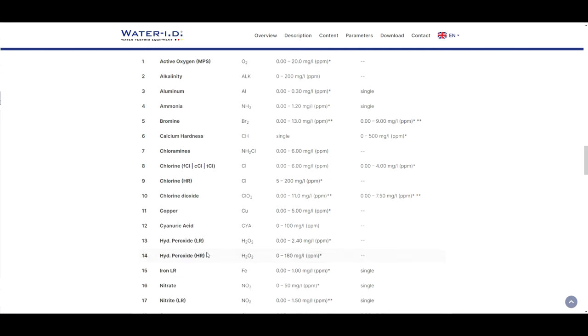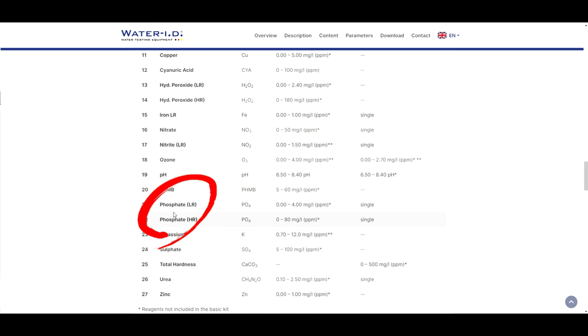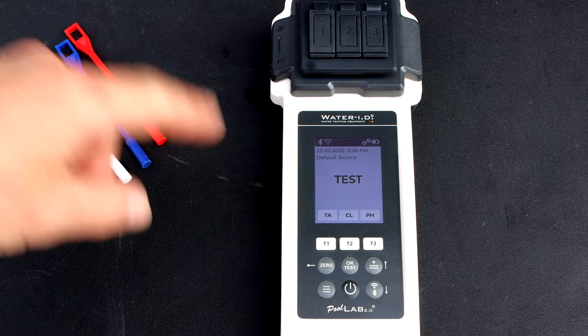You also have copper, iron, and nitrates, which is something that's becoming more and more of a problem here in the United States. You can also test ozone if you have an ozone system, and you have phosphates low range and phosphates high range.